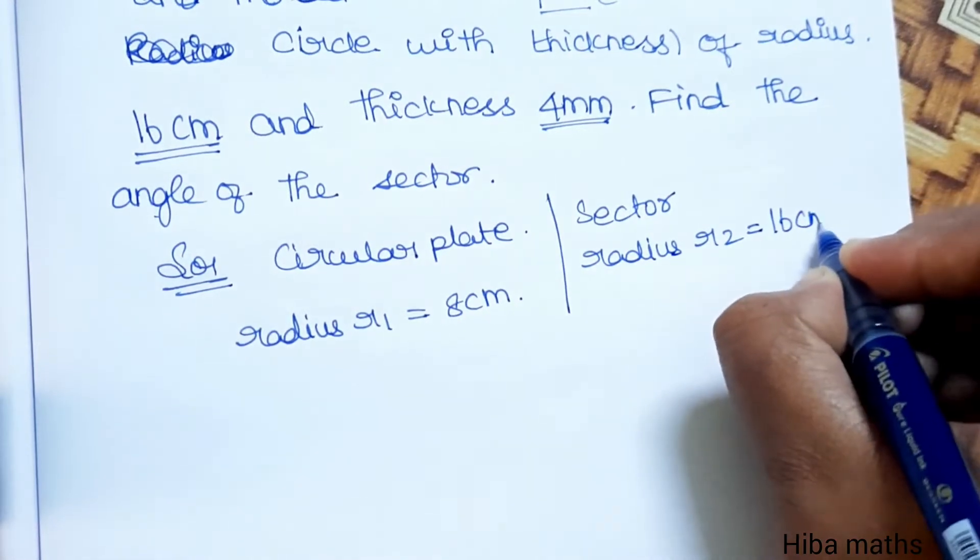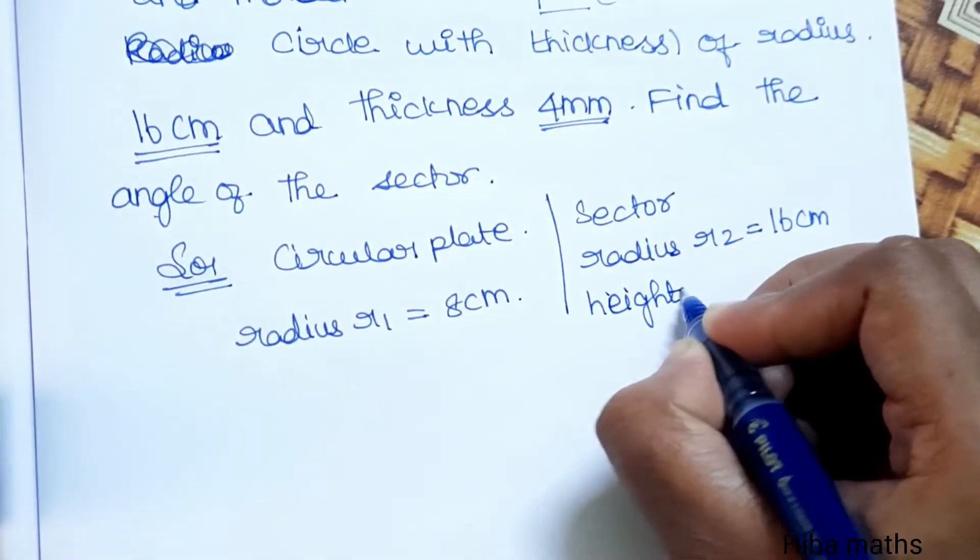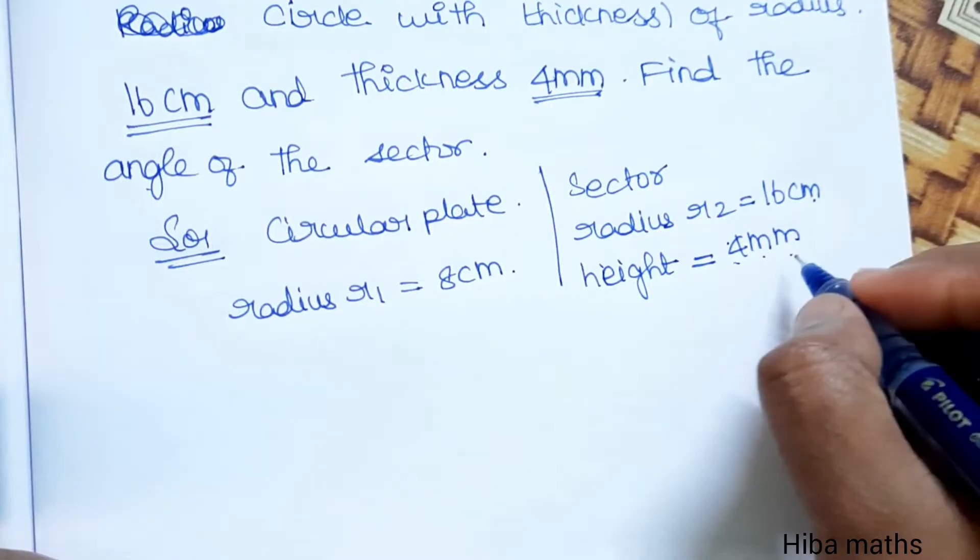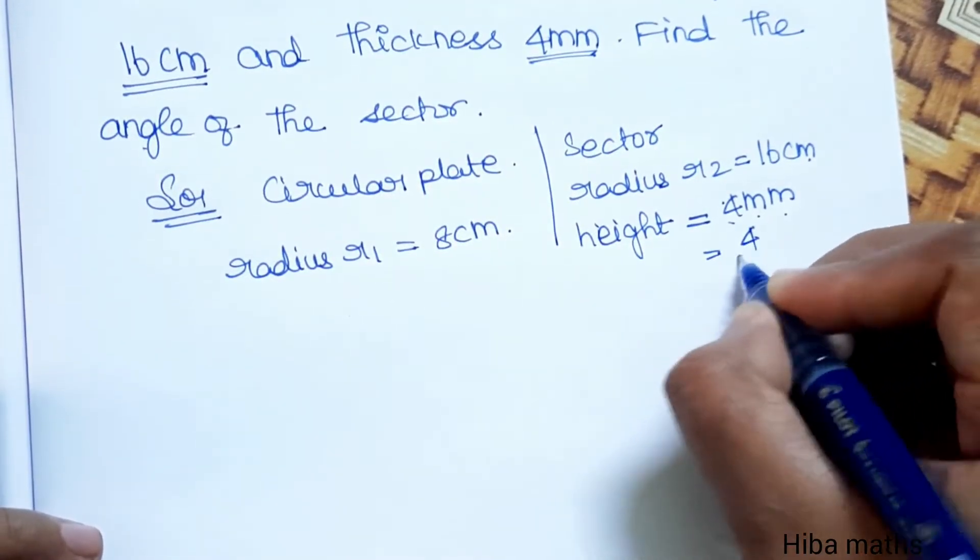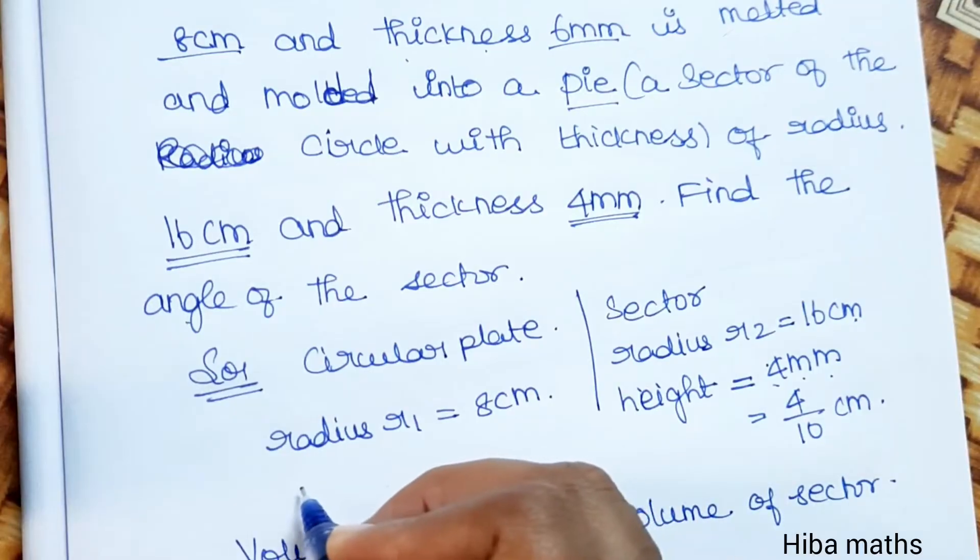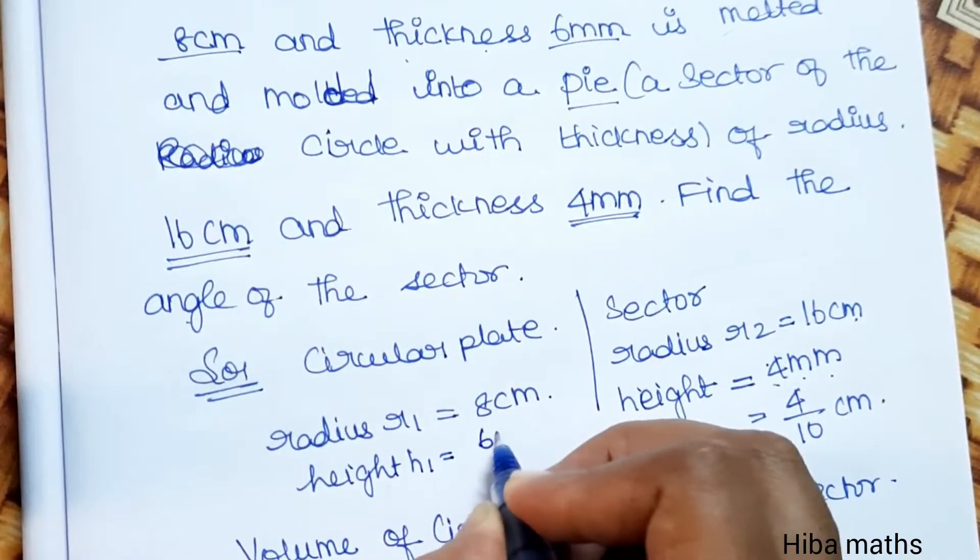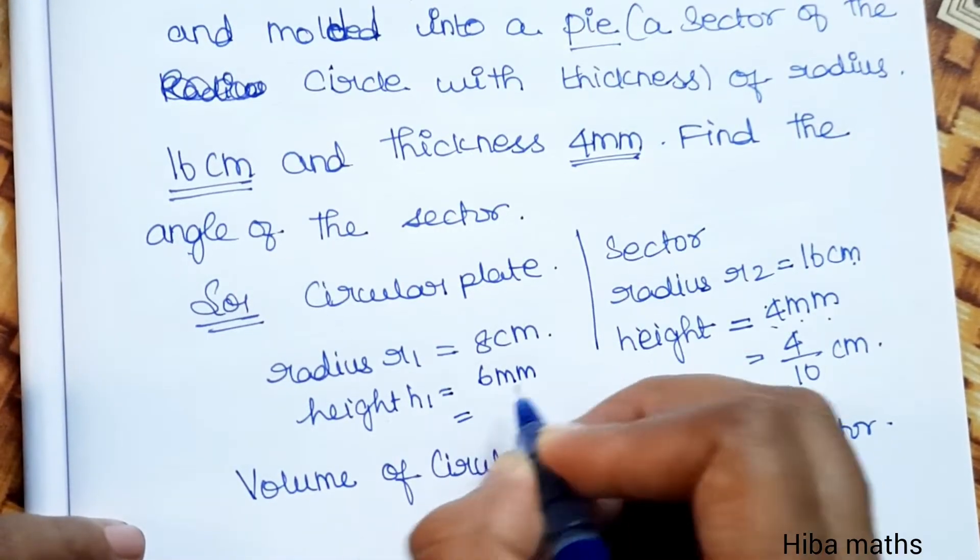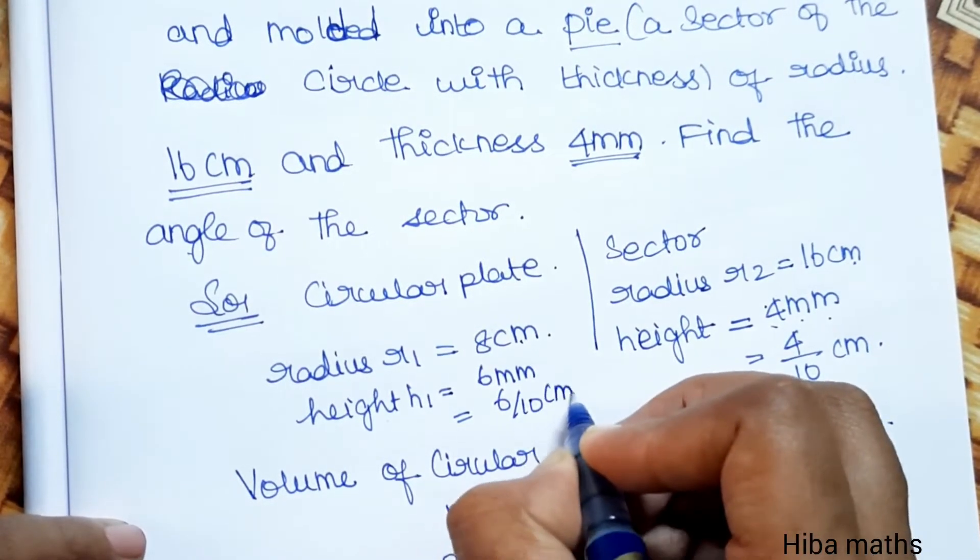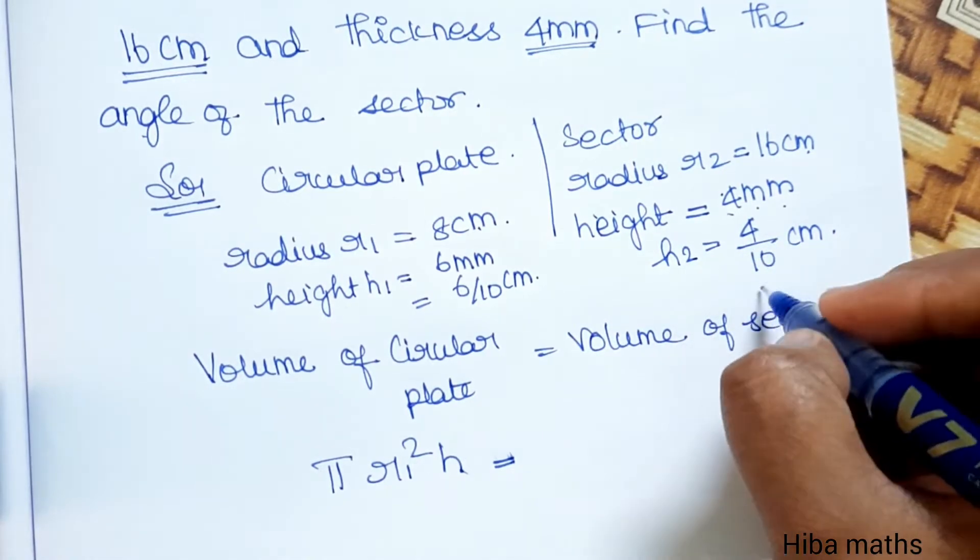The thickness or height h1 is 6 mm, which is 6/10 cm. For the sector, h2 is 4 mm, which is 4/10 cm.